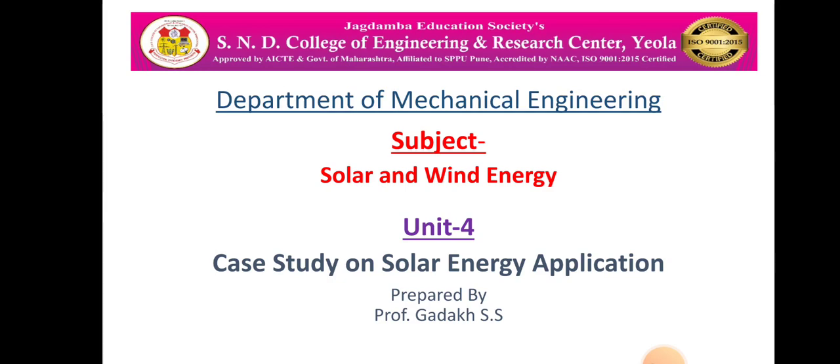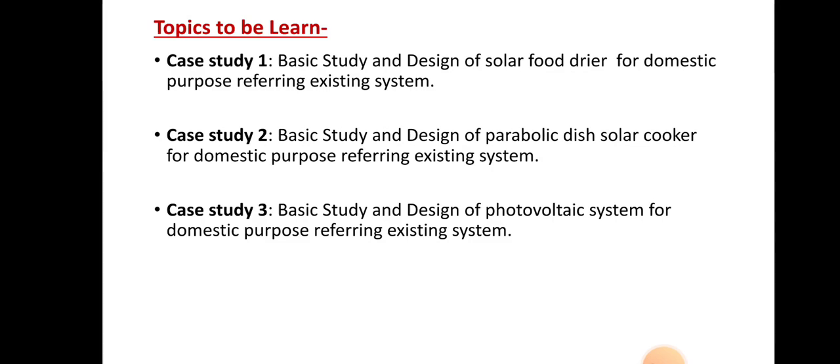In this unit, we will first see what we have to learn. I have given one topic — the topics to be learned in unit number four. We have to learn case studies of solar energy applications. Out of the many applications, we have to learn three. The first case study is on the basic study and design of a solar food dryer for domestic purpose, referring to an existing system.